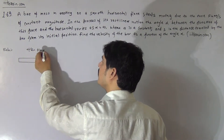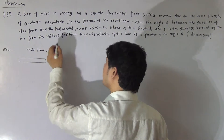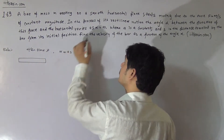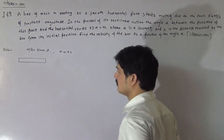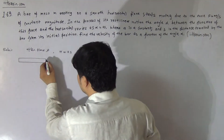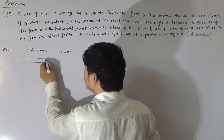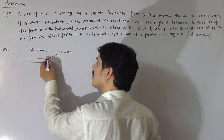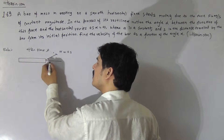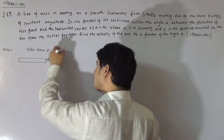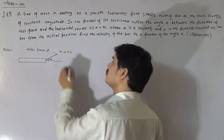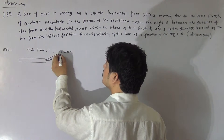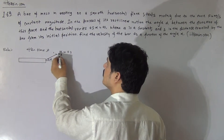After time T, let the angle be alpha and it is equal to a times s as given. Then at that moment the direction of force will be at an angle alpha with the horizontal, and this force magnitude is consistently Mg by 3.